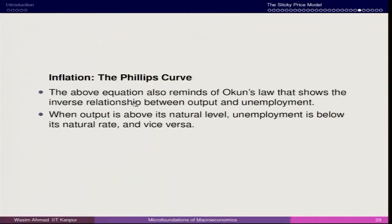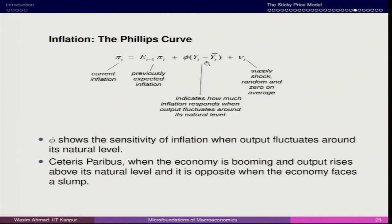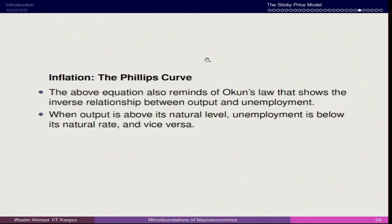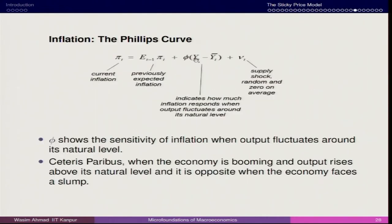The output gap also talks about unemployment. The above equation can be linked with Okun's Law, which shows the inverse relationship between output and unemployment. If Yt > Yt-bar, unemployment will be lower; if Yt < Yt-bar, unemployment will be higher. So output and unemployment are inversely linked through the output gap — this is the Okun's Law dimension.